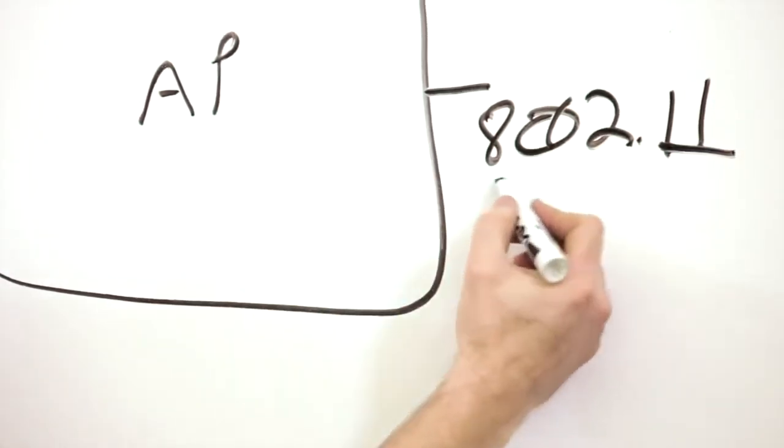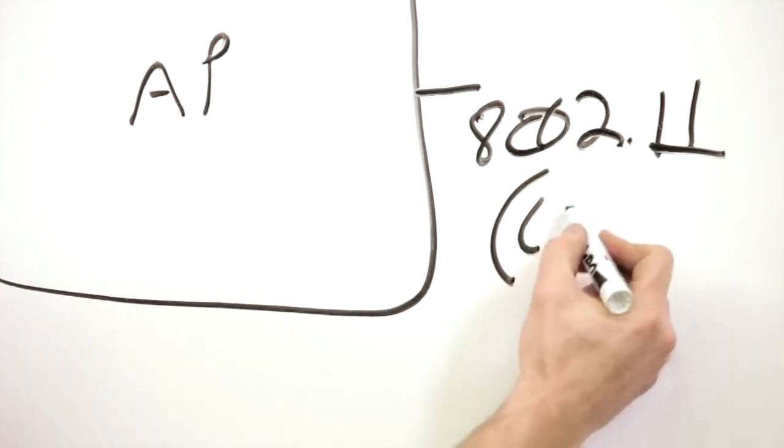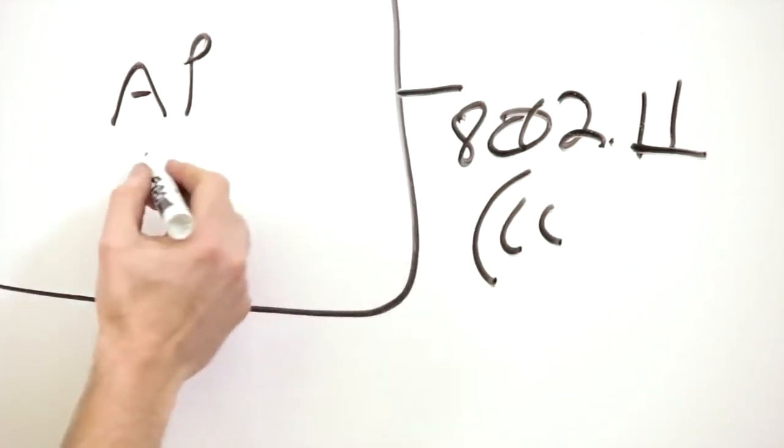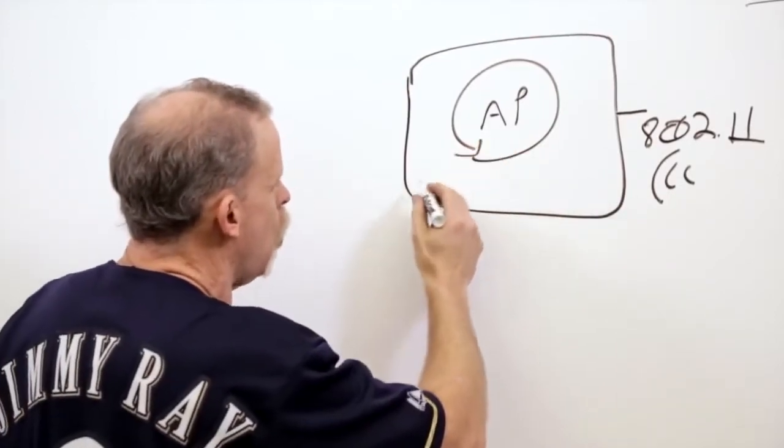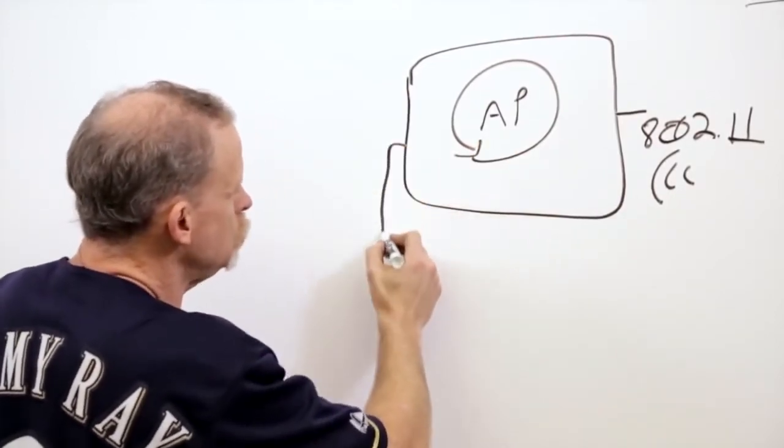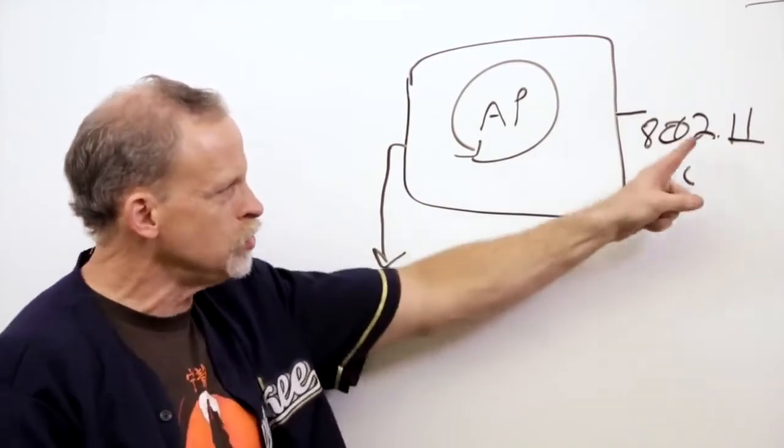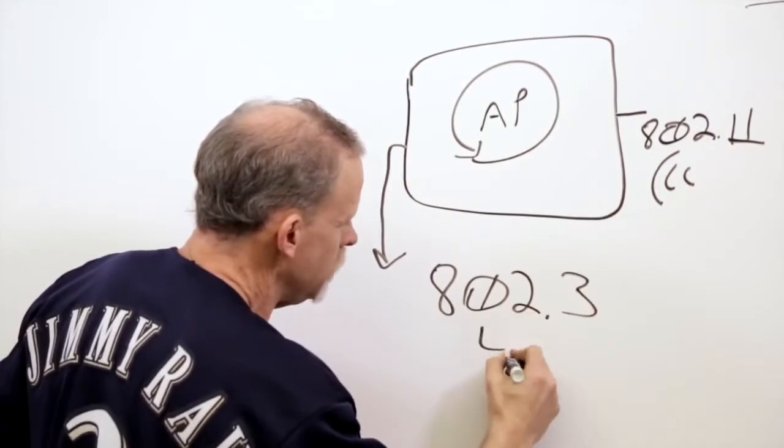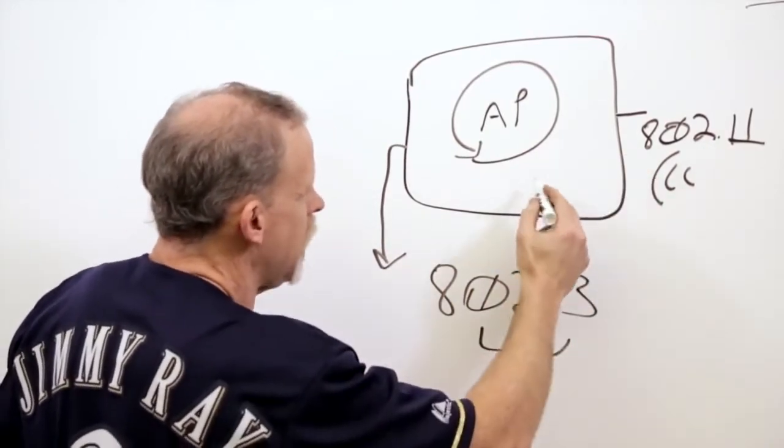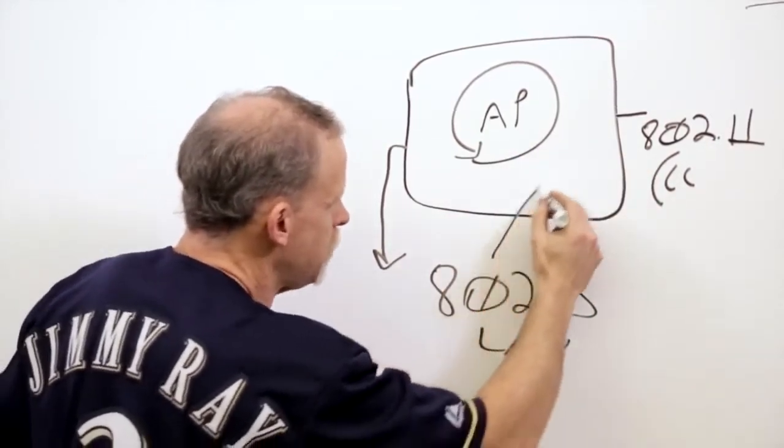I'm taking that signal as it comes back in from the client, and then I'm converting it. Because I've got to be able to convert that signal over to actually use it on my network. My network doesn't use 802.11 frames. It uses 802.3, which is our LAN stuff, right? So it takes that frame type and converts it to this type of frame.